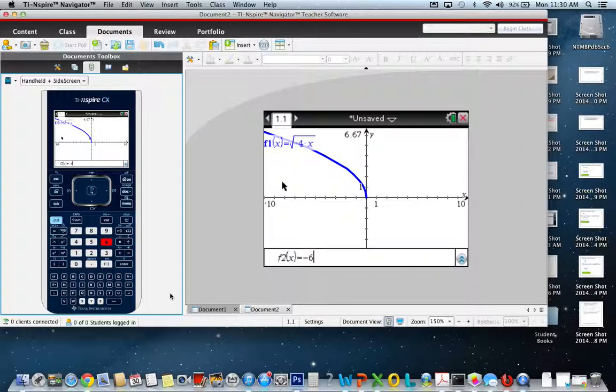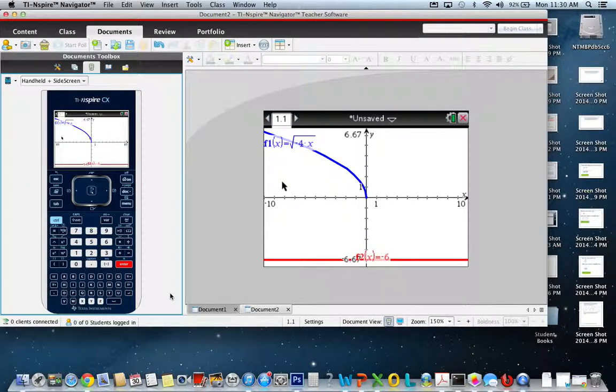So we had square root of negative 4x equals negative 6, and you can see that those don't intersect and there is no solution between those two expressions, so that answer is no solution. However, if you solve that algebraically, you end up with x equals negative 9 as a proposed solution, but when you substitute it back in, you can see that it's not true.